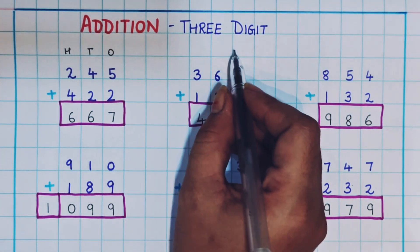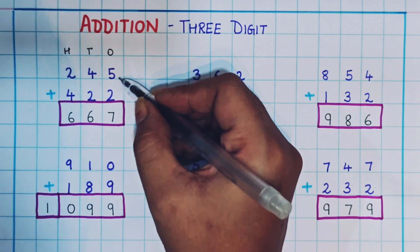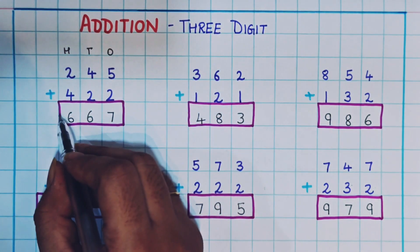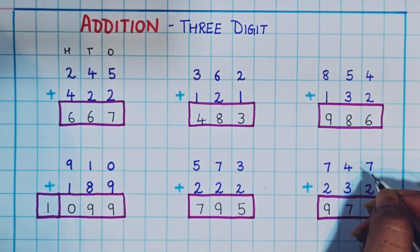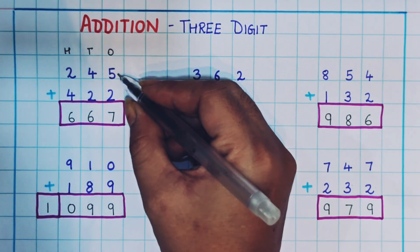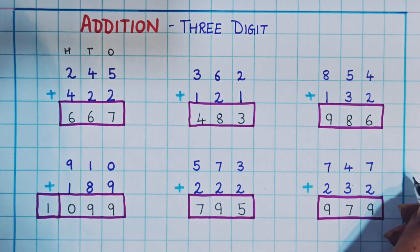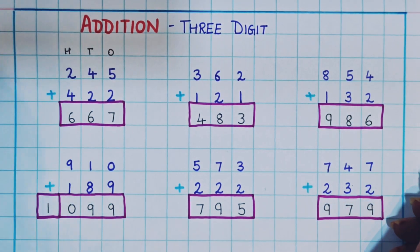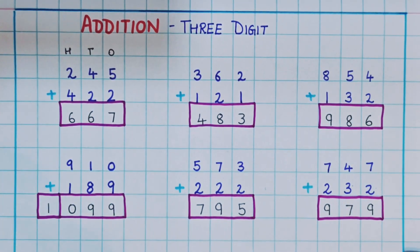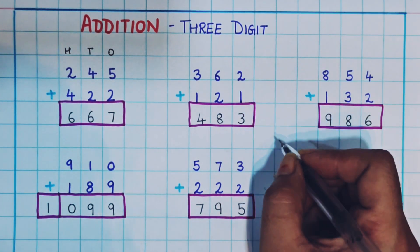I hope the addition of 3-digit numbers is clear to you. We will always begin the addition from the ones place and then move towards the left. Always keep in mind: when adding 2 numbers, keep the bigger number in your mind and then add the other smaller number. Thank you everyone. If you enjoyed this video, do give it a like, share this video and subscribe to our channel. Bye!